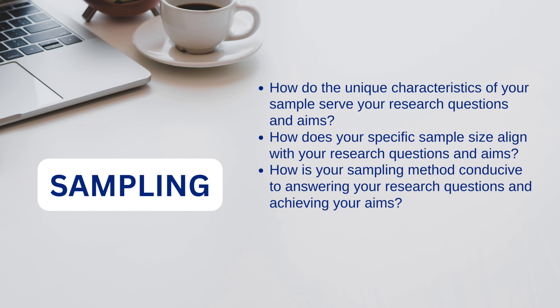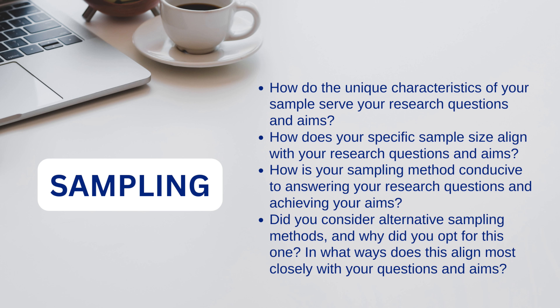How is your sampling method conducive to answering your research questions and achieving your aims? More scientific positivist methods like random sampling or quota sampling align with aims to identify patterns or trends, whilst purposive or snowball sampling — more commonly associated with interpretivist research — might be more appropriate for understandings and meanings. Did you consider alternative sampling methods, and why did you opt for this one? Always remember the why not here — it does help you tackle the why.